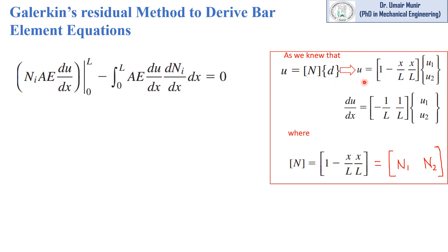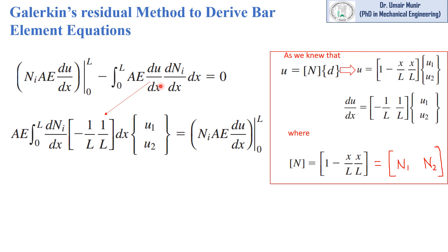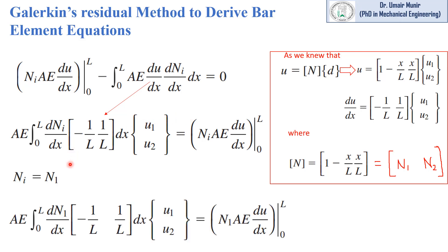Where N is the shape vector matrix. The N matrix equals [1 minus x over L, x over L]. If we differentiate u with respect to x, we get the equation in this form, where N is the shape vector with two elements: the first element is N_1 equals 1 minus x over L, and the second element is N_2 equals x over L. We then replace delta_u over delta_x with this derivative. In the next step, we put N_i equal to N_1, because our bar element has two nodes.